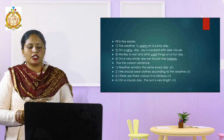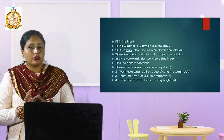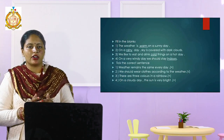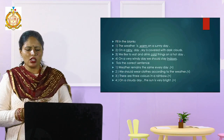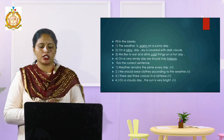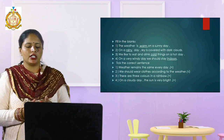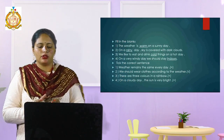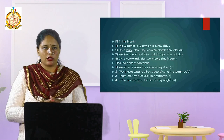Third: there are three colors in the rainbow. This is wrong — there are seven colors in a rainbow, so this statement gets a cross. Fourth: on a cloudy day the sun is very bright. This is also incorrect, so put a cross here.